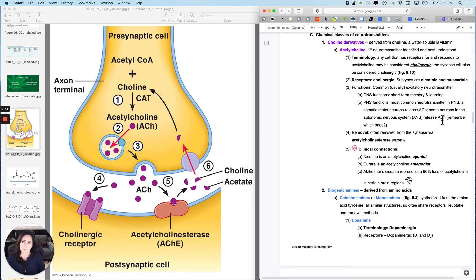Curare is that poison that we've talked about before that is derived, it's a plant derivative and was used in blow darts and things like that. That is an acetylcholine antagonist. And so, it can cause, for instance, paralysis in skeletal muscle.